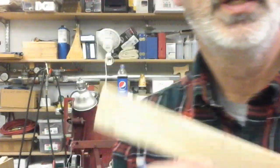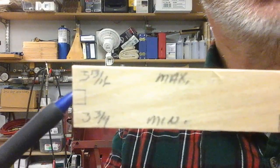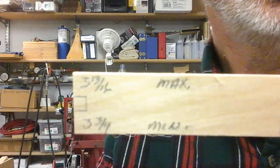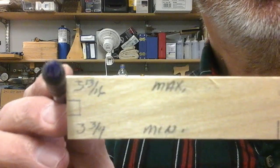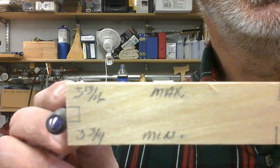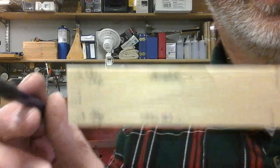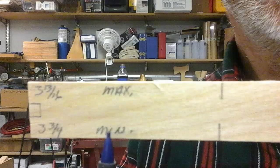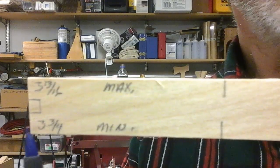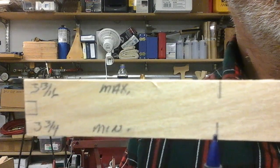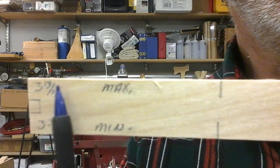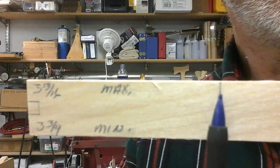First thing you want to do is cut a quarter inch by quarter inch hole in the end of the paint stick in the center. It doesn't have to be perfect. Make sure the end of your paint stick is square. When I first did this one it wasn't, it threw my measurements off. Now you want to write minimum and max on the stick. On the minimum side you want to measure down from the end three and three quarter inches and draw a line. On the maximum side you want to go three and thirteen sixteenths and draw a line. That's only a sixteenth of an inch variation.